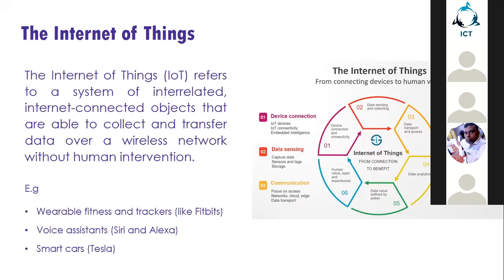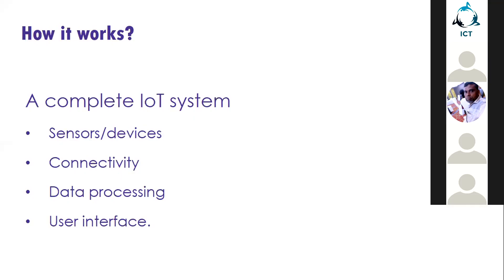Almost everyone is wearing some kind of Fitbit to track their heart rate and number of steps traveled, and so much more information. That's the example I'll be taking into consideration while explaining IoT. Other examples are voice assistants like Siri and Alexa, and for large-scale IoT projects, smart cars like Tesla.